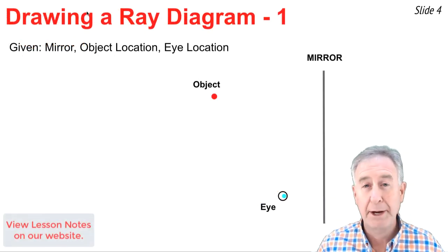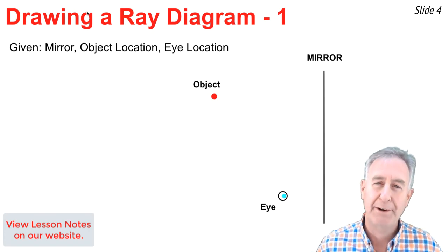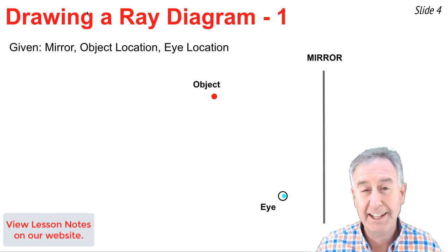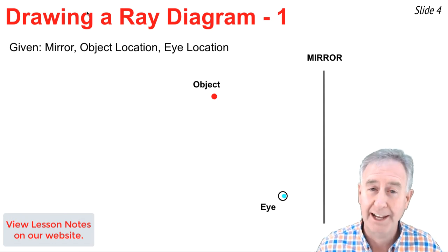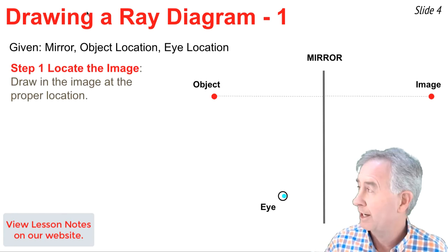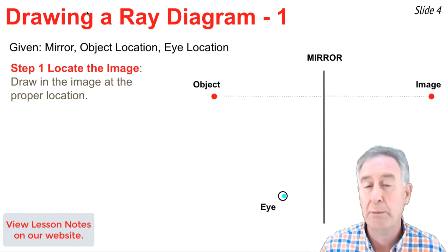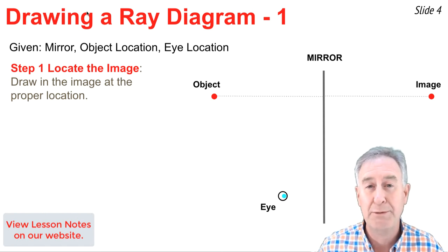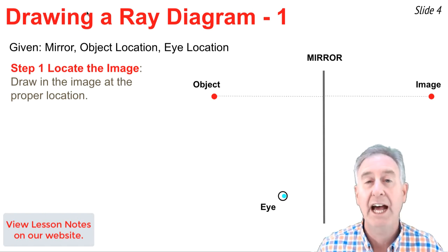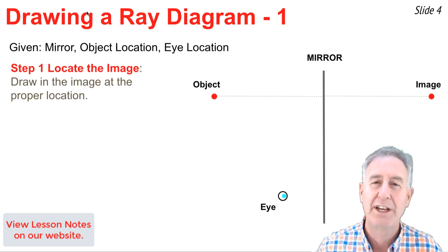Here we are given a mirror, an object location, and an eye location, and we have to draw a ray diagram to show how light gets from the object to mirror to the eye. The process involves three steps, with the first step being to locate the image of the object. You can do this with a straight edge ruler — measure along a perpendicular line from the object to the mirror, and then along the same perpendicular line out the other side the same distance. Put a dot down and label it the image.